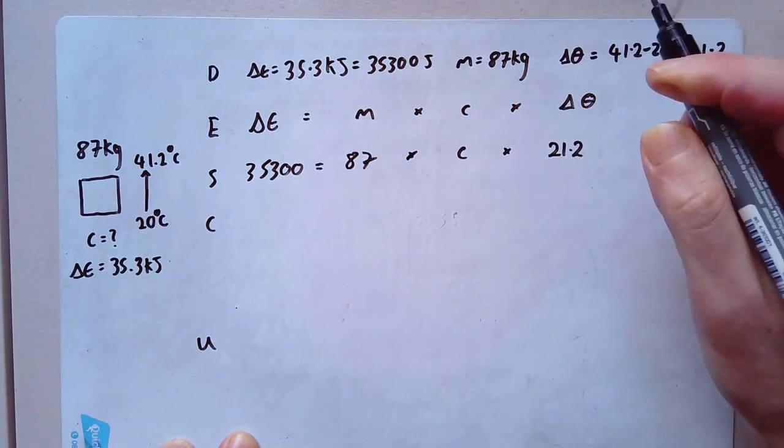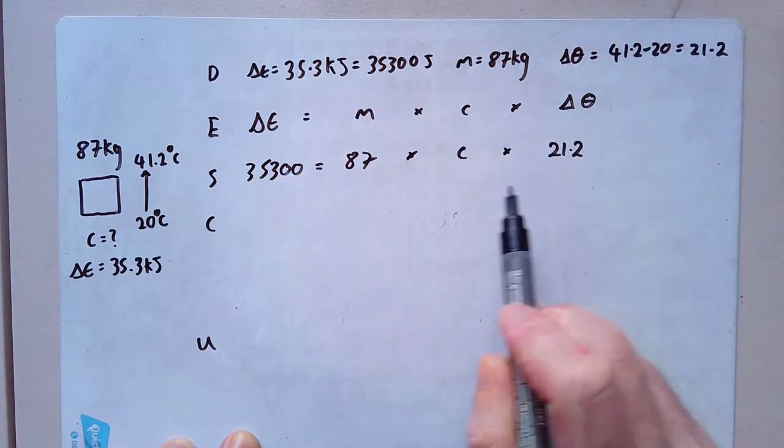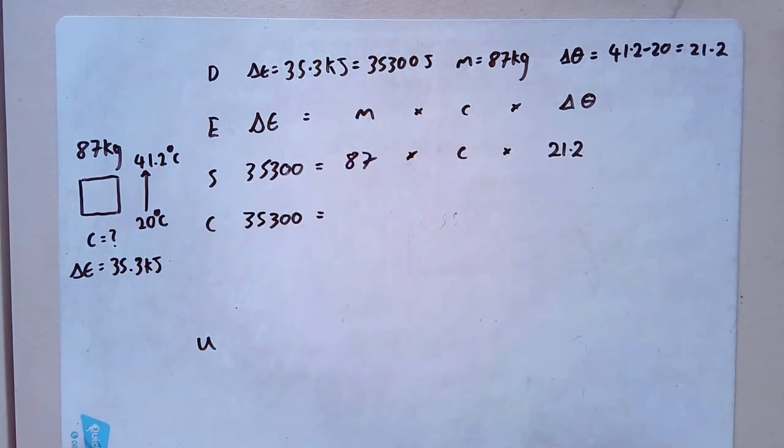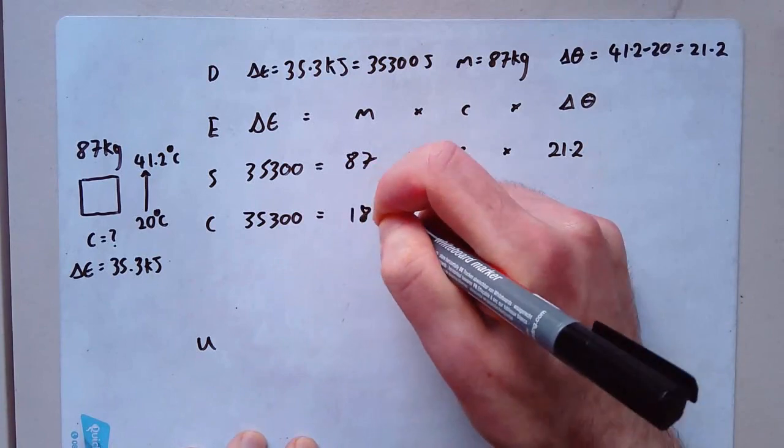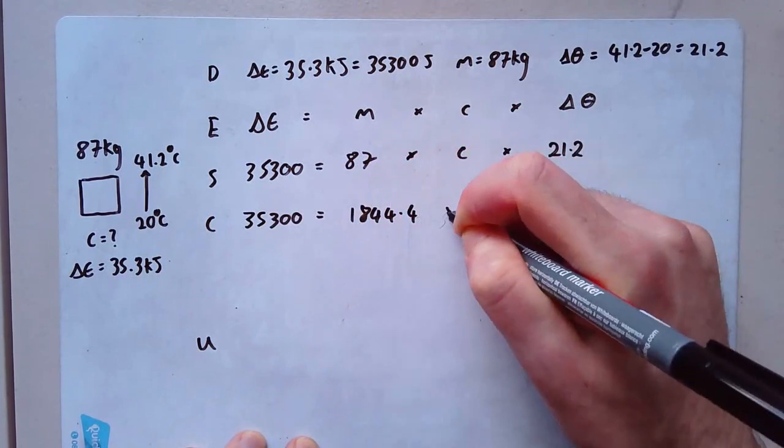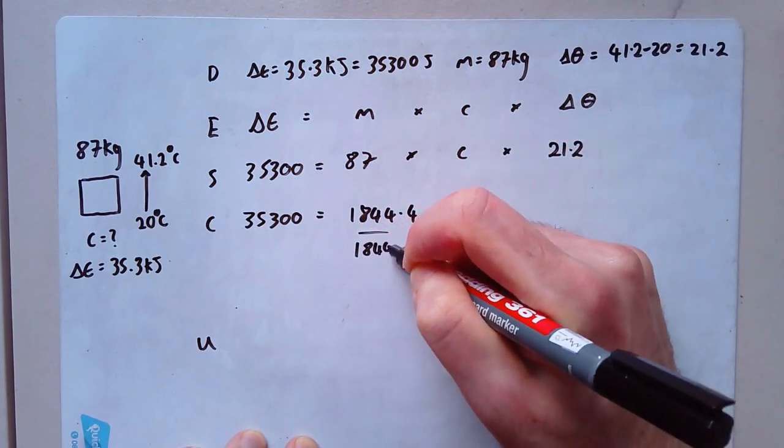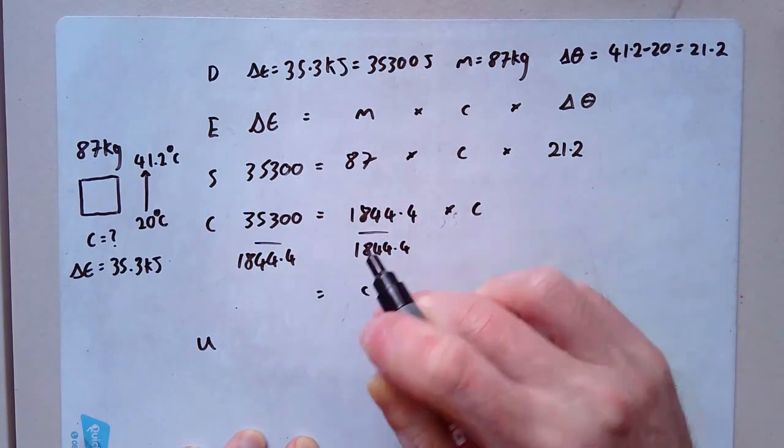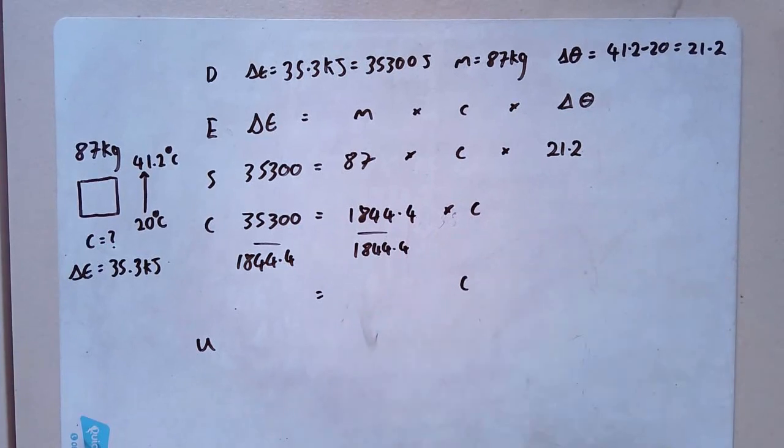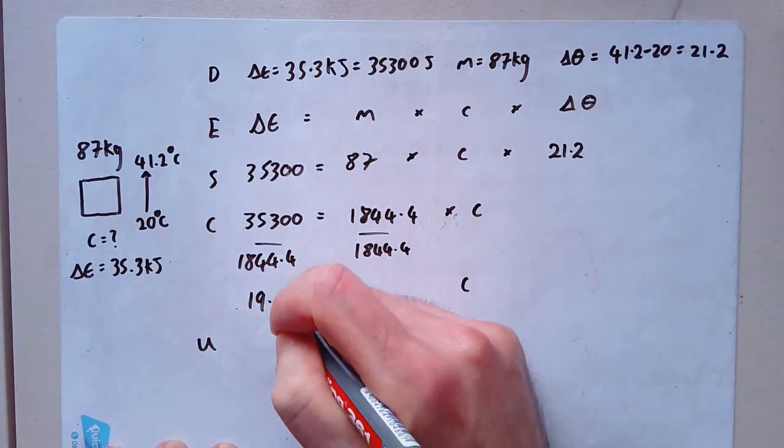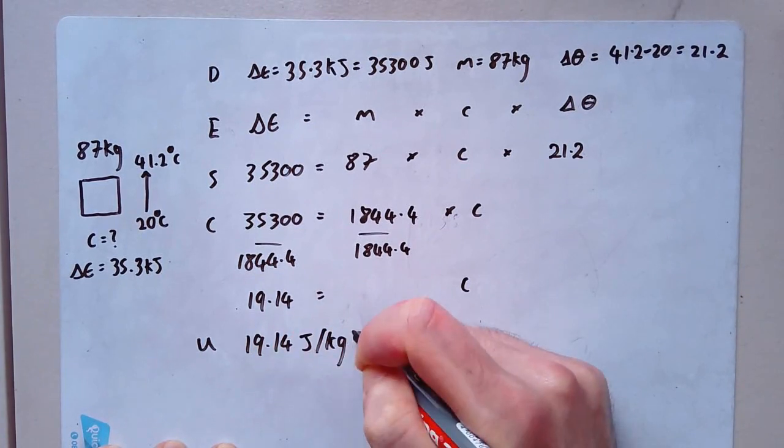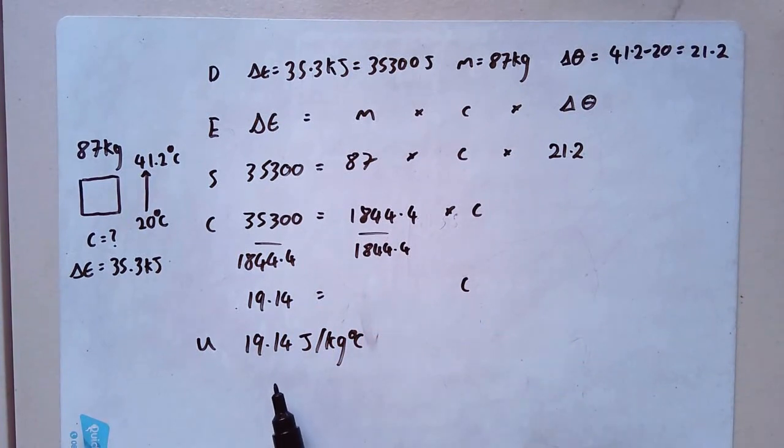How am I going to work this out? First, I'm going to times these two together. So I'll get 35,300 equals 87 times 21.2, which gives me 1844.4 times by C. And then divide both sides by 1844.4. And I get C 35,300 divided by 1844.4 gives me 19.14. And my unit for that 19.14 joules per kilogram degree C, which means this particular object requires 19.14 joules for every kilogram for every rise in one degree.